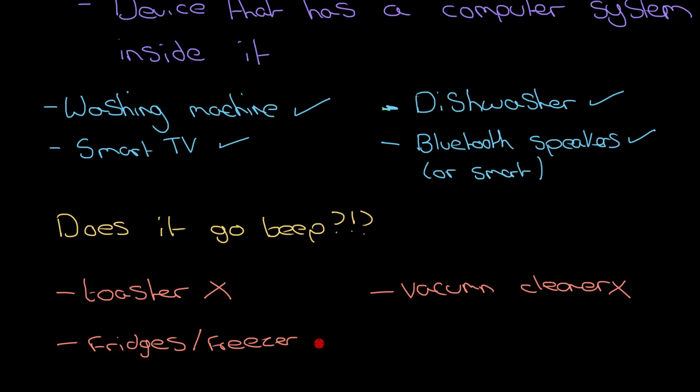The only exception for that, and if you had this as a question, is like if you've got some sort of smart fridge. So if you had it, you'd have to put that word smart, and then you might get a mark if you're having this in the exam. Because smart fridges, which have got some sort of digital display up front, possibly. But your bog standard fridge or freezer, no.